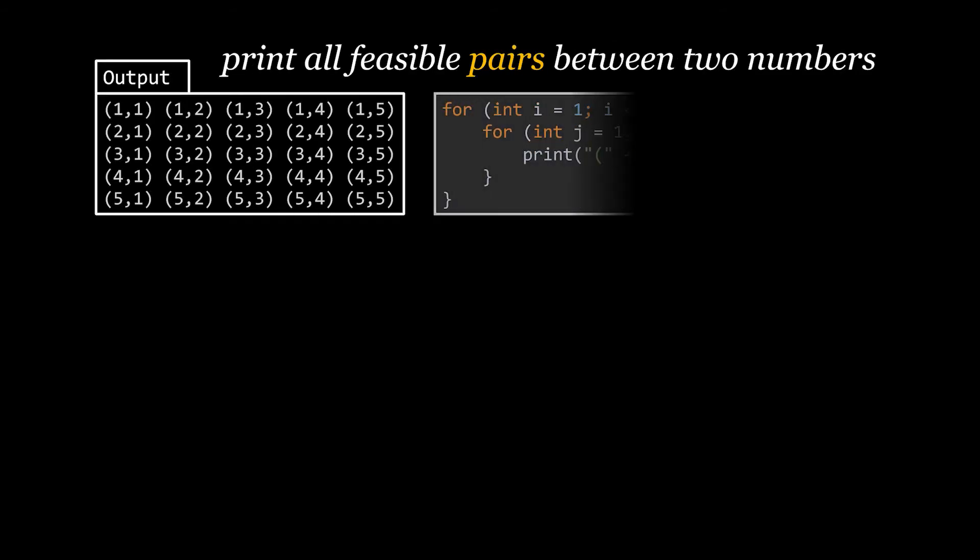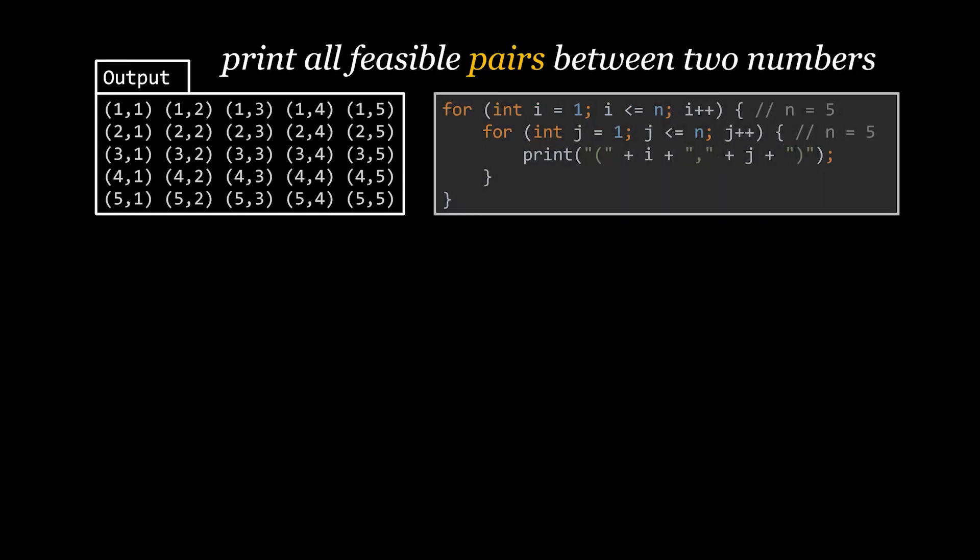Let's now take a second example. In this one we will try to print all the pairs of integers between 1 and 5. The output I am seeking is all the pairs you can see, and it can be done by iterating over all possible combinations of the given numbers using two nested for loops. Let's try to calculate together the space and time complexities behind this.